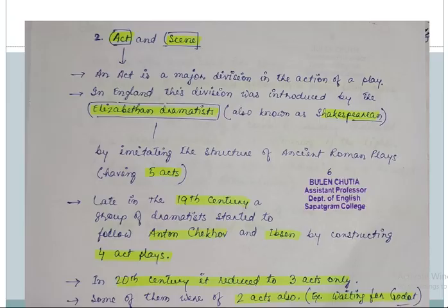First of all we must know what act is. An act is a major division in the action of a play. That is, the play is divided into acts. In England this division was introduced by the Elizabethan dramatists, who were also known as the Shakespeareans, or the 16th century dramatists.